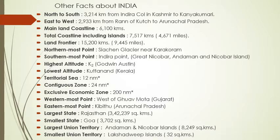Bharat ka sabse bada rajya hai Rajasthan, jiska kshetrafal hai 3,42,249 km. Smallest state — bharat ka sabse chota state hai Goa, jiska kshetrafal hai 3,702 km. Largest union territory of India is Andaman and Nicobar Island, jo cover karta hai 8,259 km. Smallest territory hai Lakshadweep, jo 32 km ka area cover karta hai.